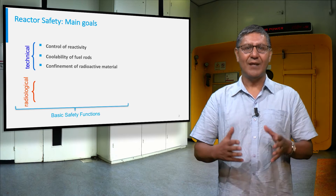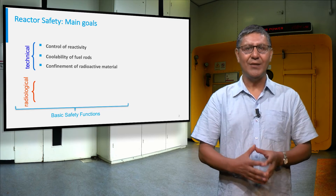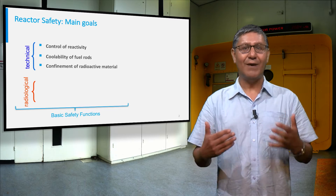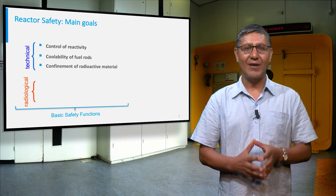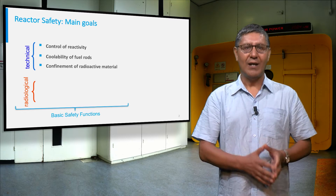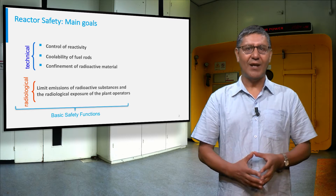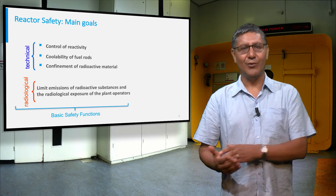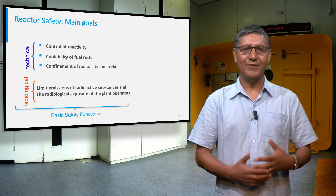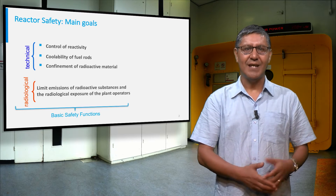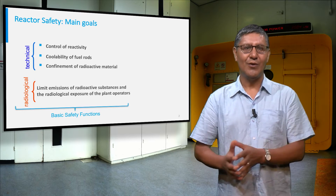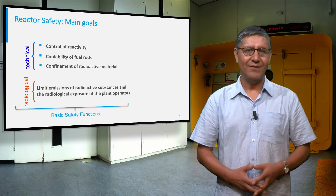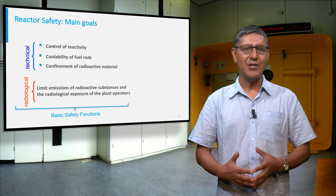Technical goals are the control of reactivity, the core coolability, and the confinement of radioactive material, while the radiological goals are intended to limit both the emissions of radioactive substances and the radiological exposure of the plant operators by appropriate facilities and measures.